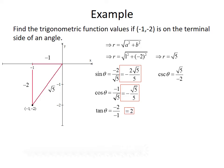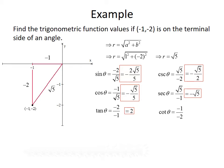Cosecant of theta is hypotenuse over opposite: √5 over -2, which is -√5 over 2. Secant of theta is hypotenuse over adjacent: √5 divided by -1, which is -√5. And cotangent is adjacent over opposite: -1 divided by -2, which simplifies to positive 1/2.